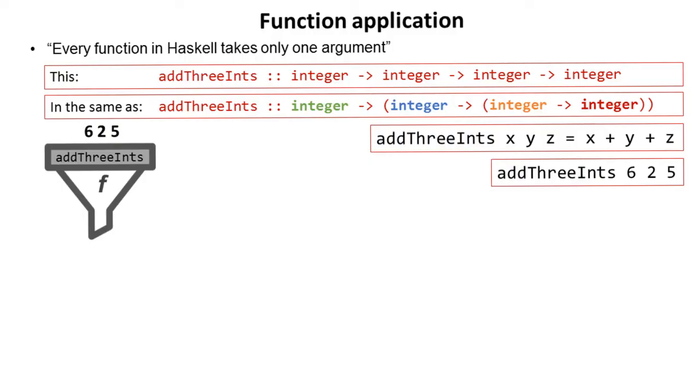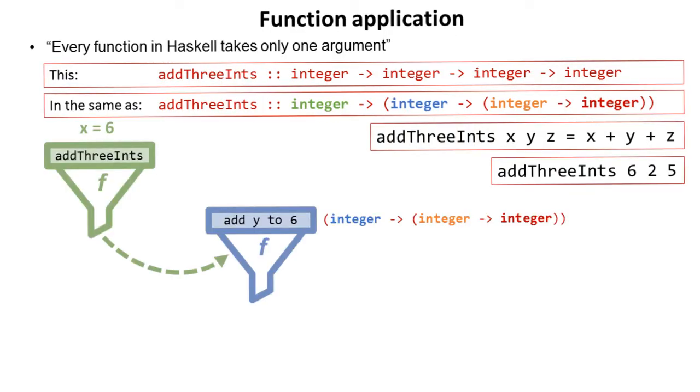We're going to think of this funnel here as our function addThreeInts and we've supplied it with the values six, two, and five. Now remember, a function in Haskell actually only takes one argument. So when we run and execute this line of code, what happens is addThreeInts runs and it takes the first argument six. It doesn't take the other two because a function in Haskell takes only one argument.